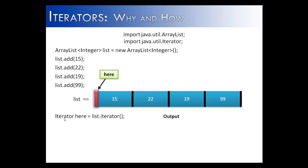Iterators do not start on a value. They start before a value. So you have to think of them as in between values inside of a list. So when you create it, it's not actually on the 15. It's before the 15.